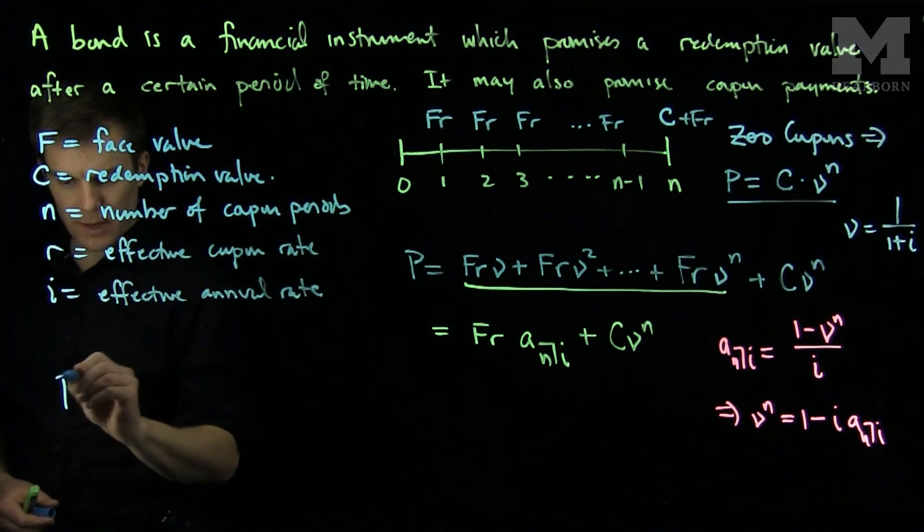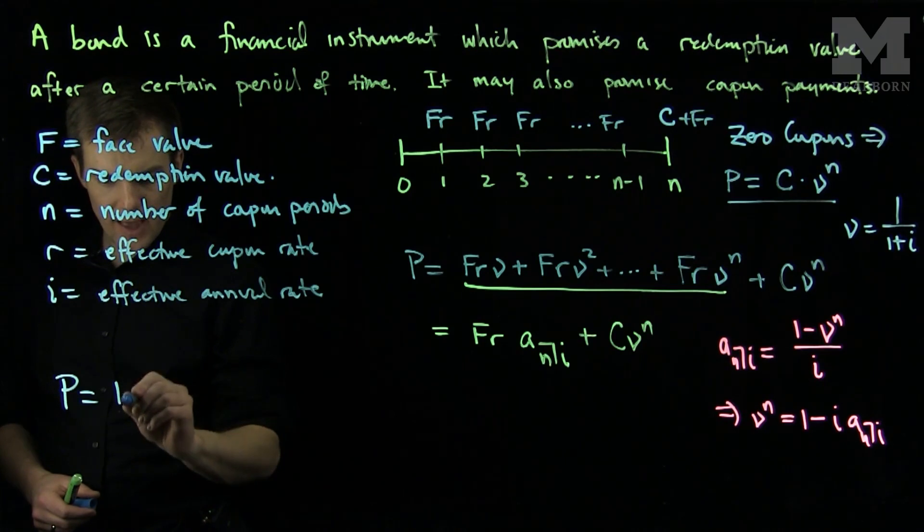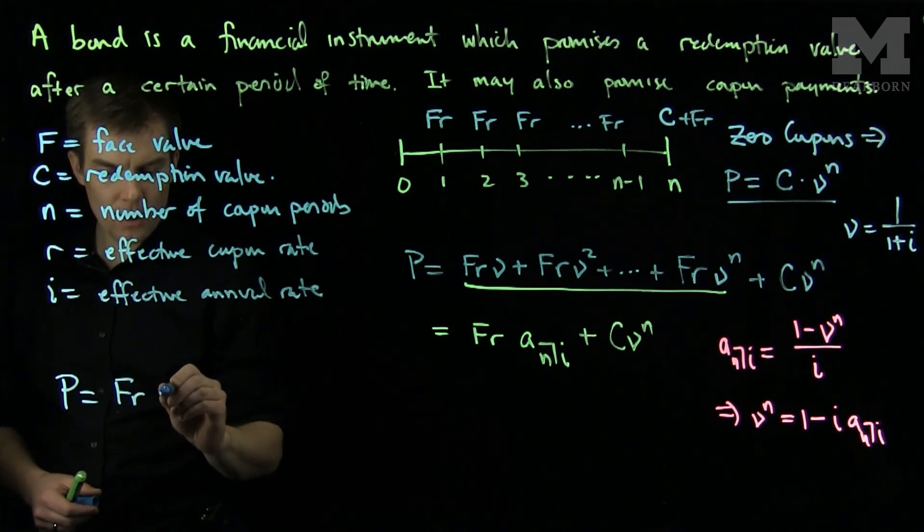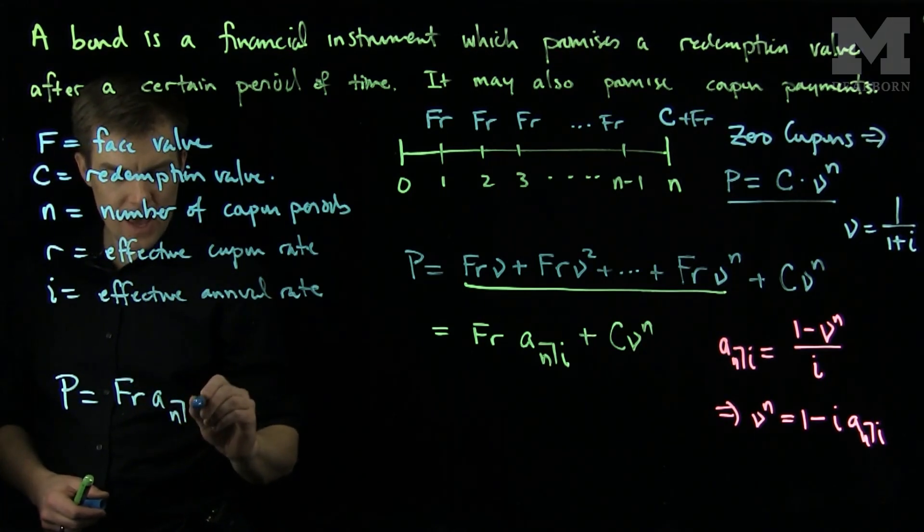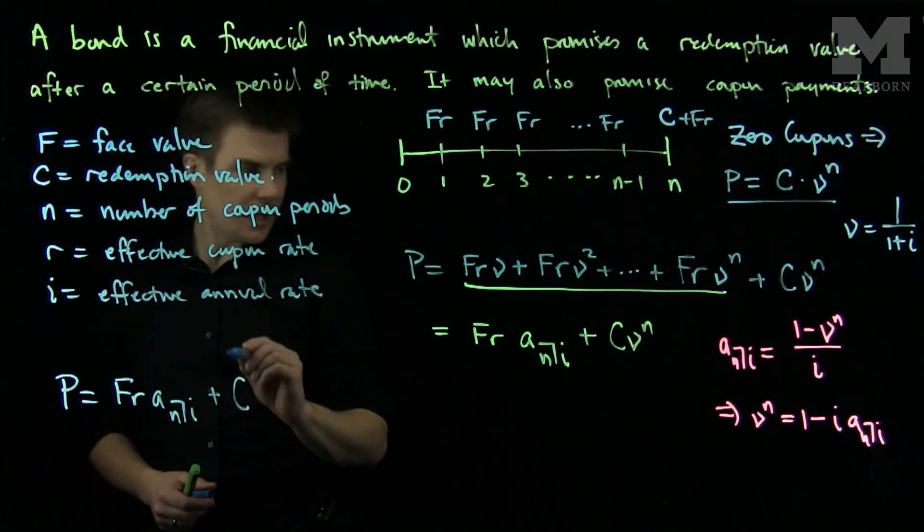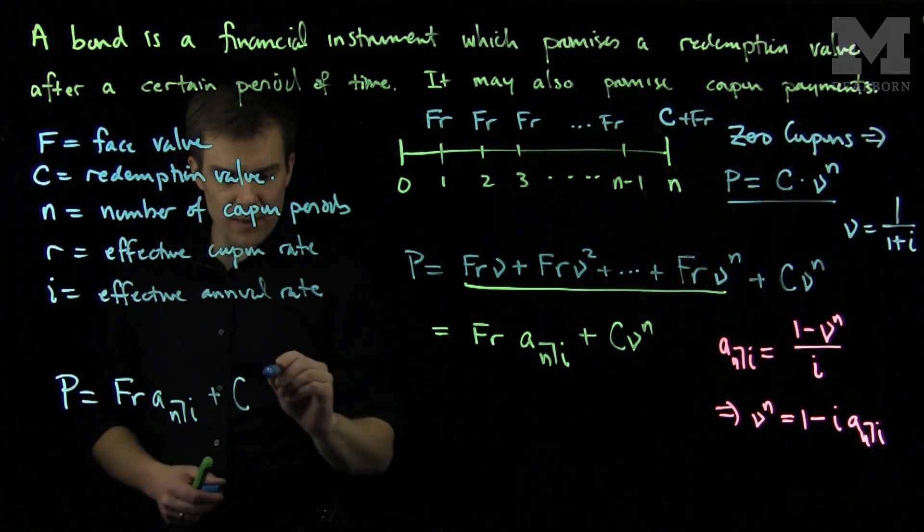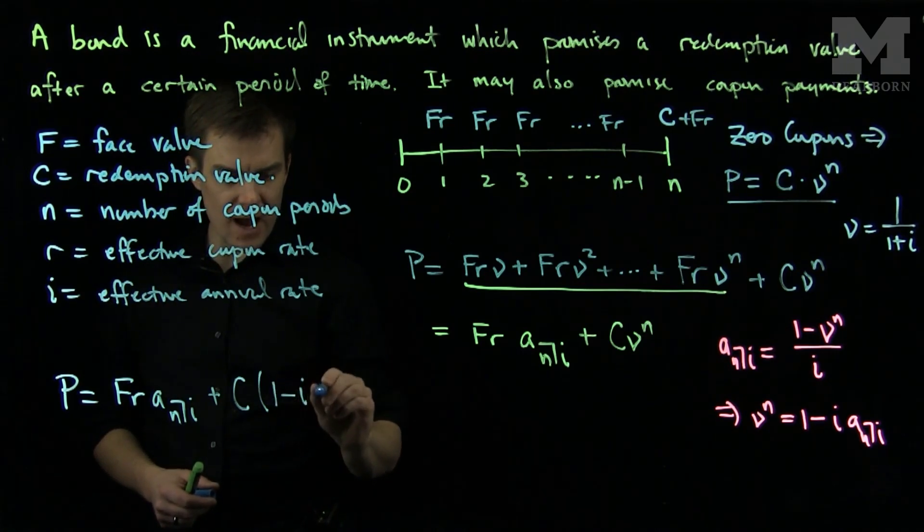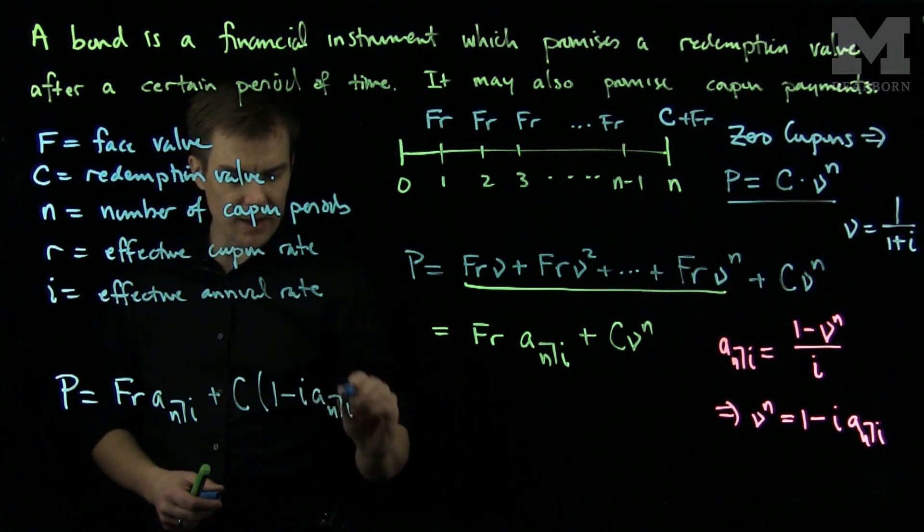The price of a coupon bond P will be FR times a angle N at I plus C, and then ν^N will be replaced with 1 minus I times a angle N at I.